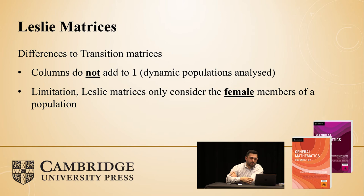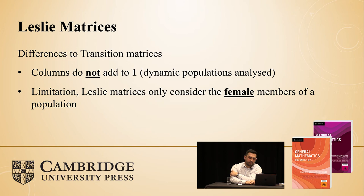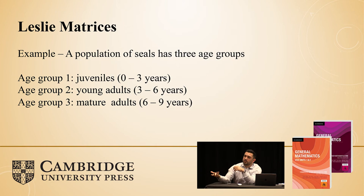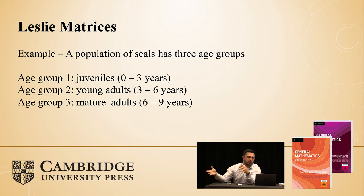There is a limitation to these matrices: they only consider the females in a population of whatever animals we're talking about, because we are considering birth rates and survival rates. For the example, we're talking about a population of seals separated into three age groups: zero to three, three to six, six to nine — labelled as juveniles, young adults, and mature adults. Those in age group one — zero to three — will not have a birth rate as they're juveniles and haven't reached that age.